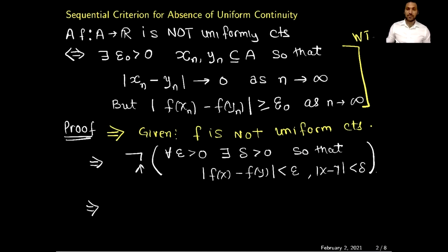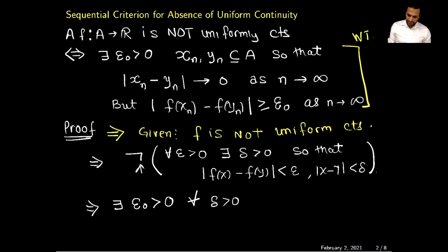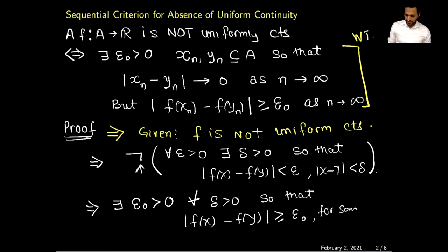Let's find the negation of that statement. The negation will be: there exists epsilon positive, and for all delta positive you can find some x and y in A so that the difference f of x minus f of y is greater than or equal to epsilon, with x minus y less than delta. This is the negation statement of uniform continuity.